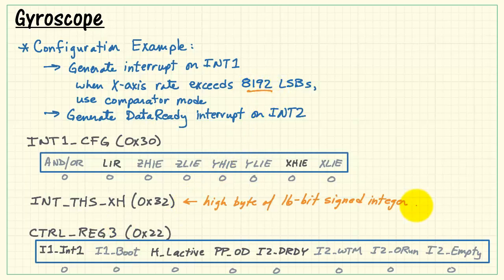8192 least significant bits. The register of interest here is the high byte of a 16-bit signed integer. 8192 would look like hexadecimal 2000, we pick off the high byte and write that.